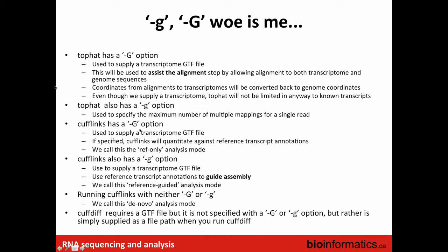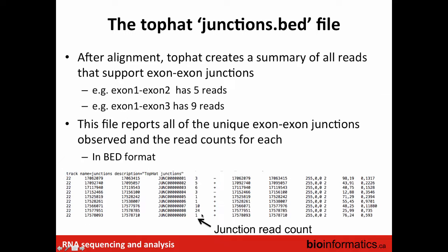The -G options in Cufflinks are what we're focused on here. We already ran Cufflinks with the capital -G to supply a transcriptome GTF in reference-only mode. Using lowercase -g instead tells Cufflinks to interpret the GTF as a guide rather than concrete information. If we don't supply a GTF file at all — neither option — that's the de novo mode where it predicts transcript structure directly from reads aligned to the reference genome. TopHat also automatically generates a junctions BED file.